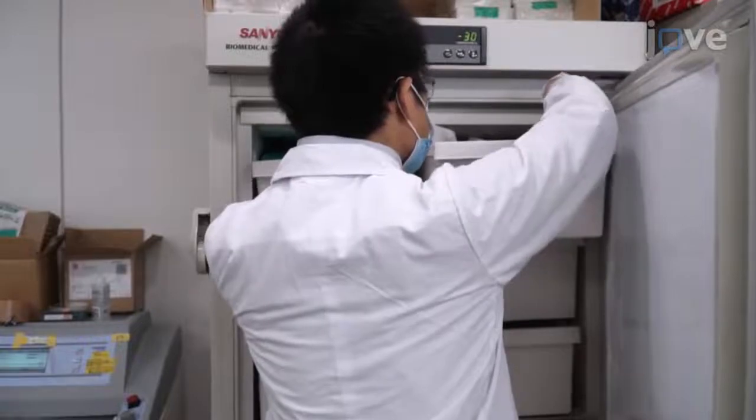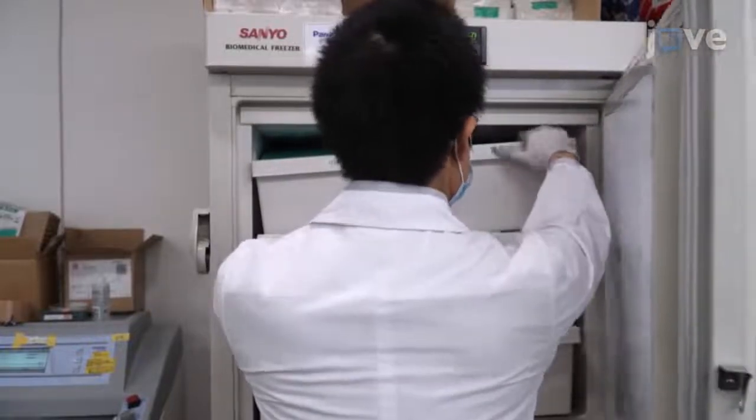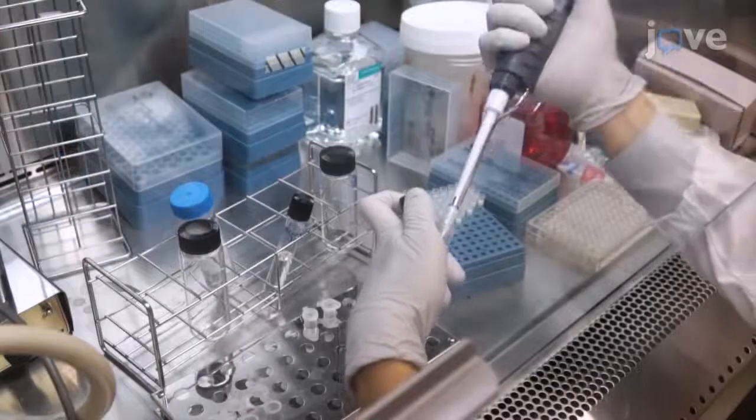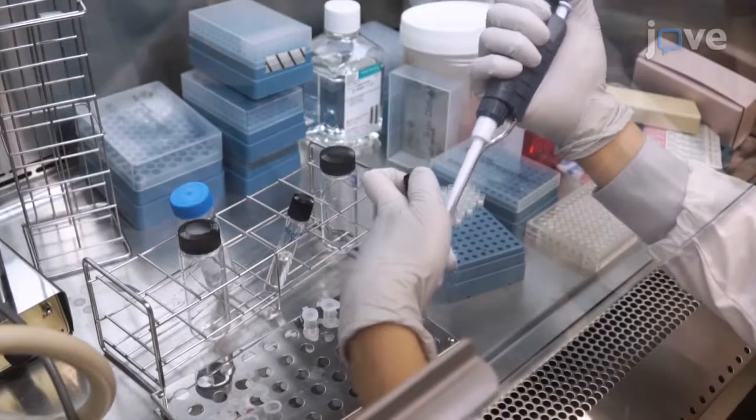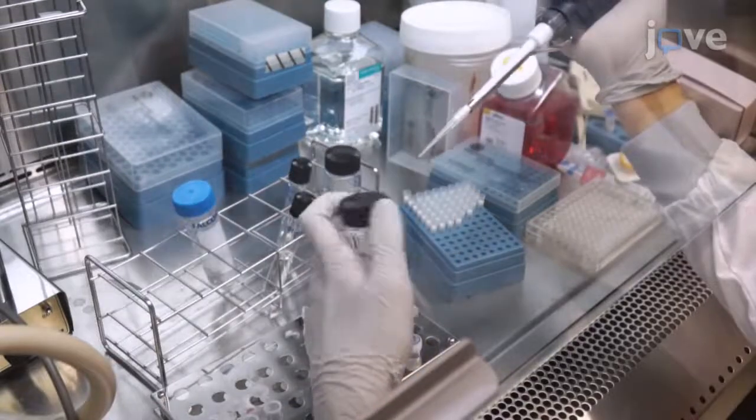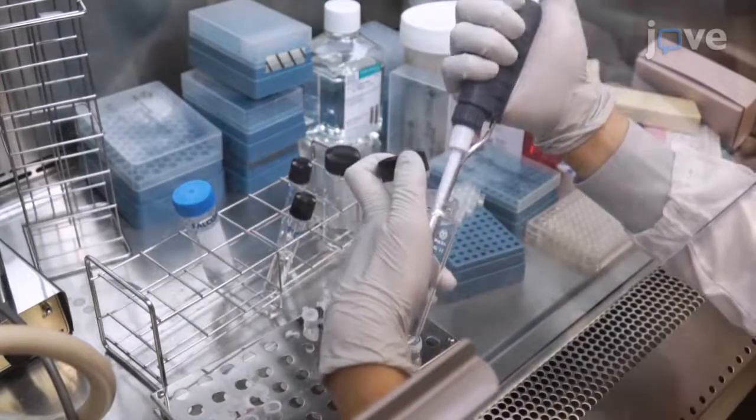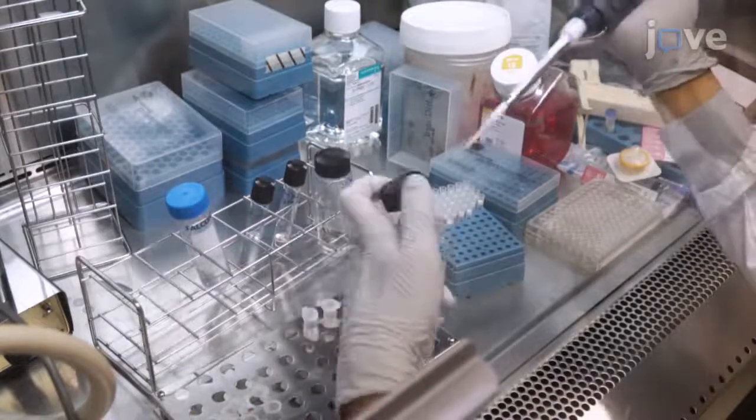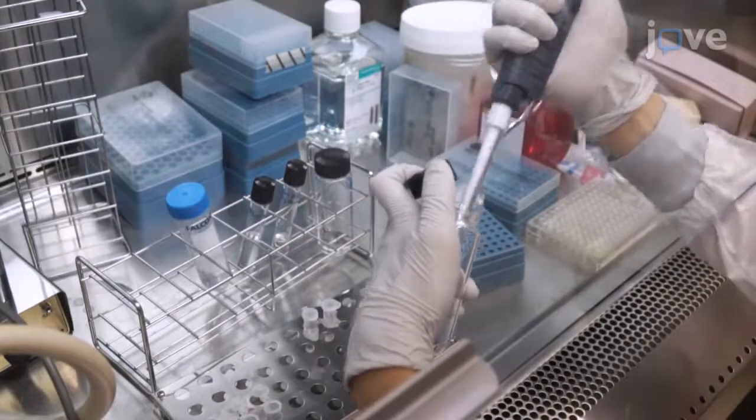Store the lipid solutions at negative 30 degrees Celsius and thaw them before use. In a fresh glass tube, mix the lipid solutions to obtain the final concentration of 100 mg per milliliter palmitate, 100 mg per milliliter oleate, and 20 mg per milliliter cholesterol.